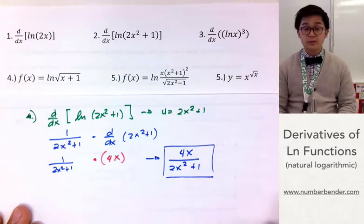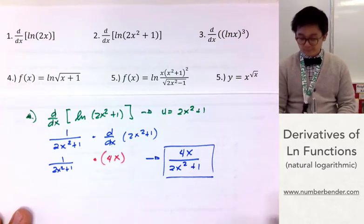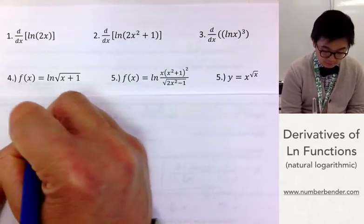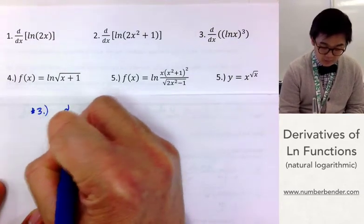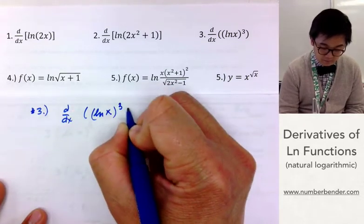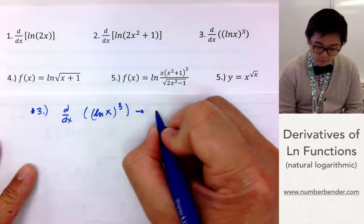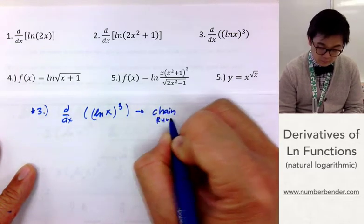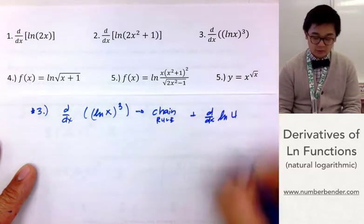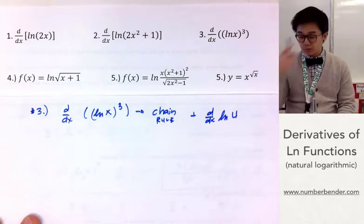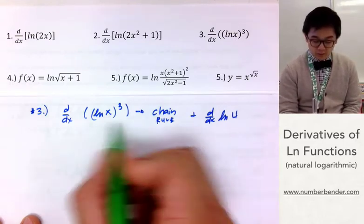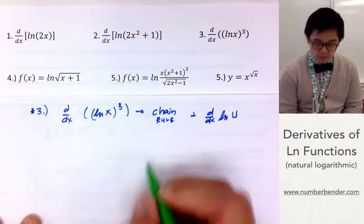That's how simple using the derivative rule is for ln. For problem number 3, we have to take the derivative of (ln x)³. Here we will be using the chain rule plus the derivative of ln u — two derivative rules in finding the derivative of problem number 3.